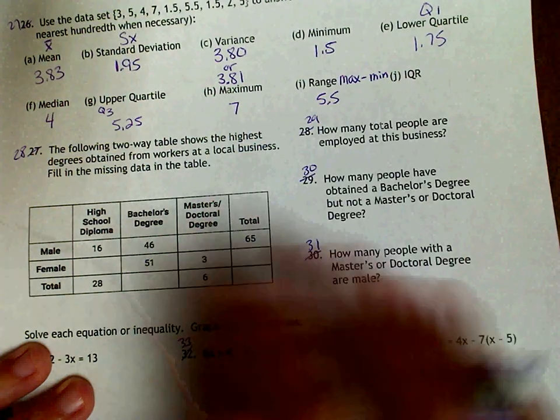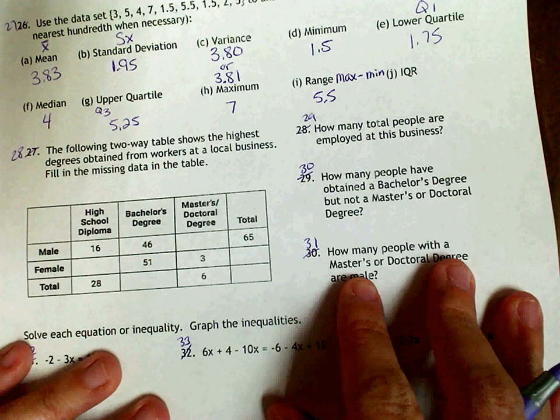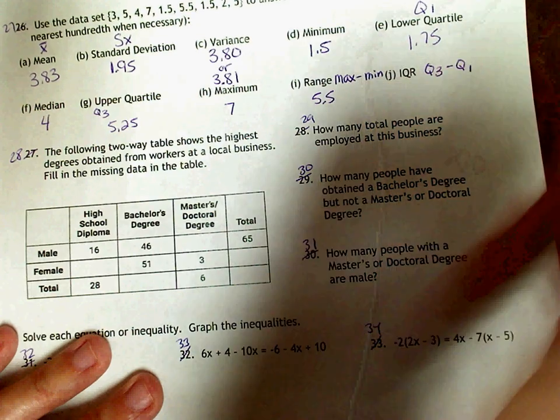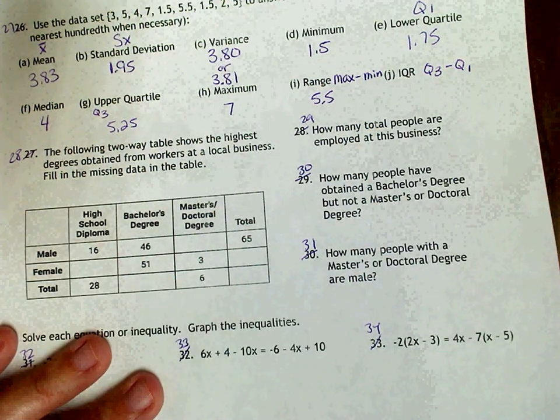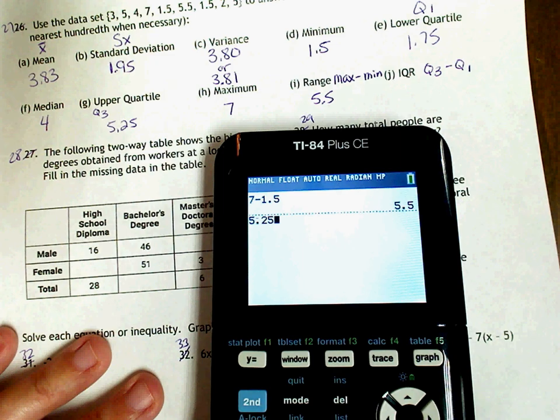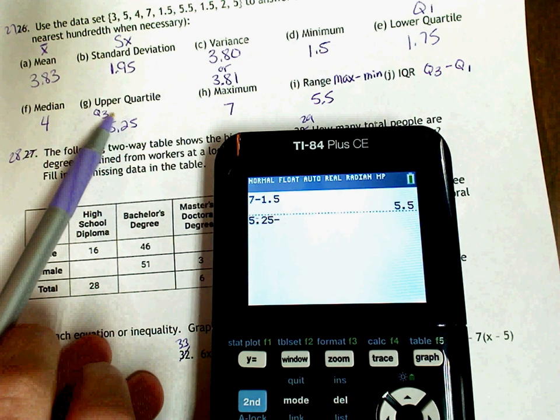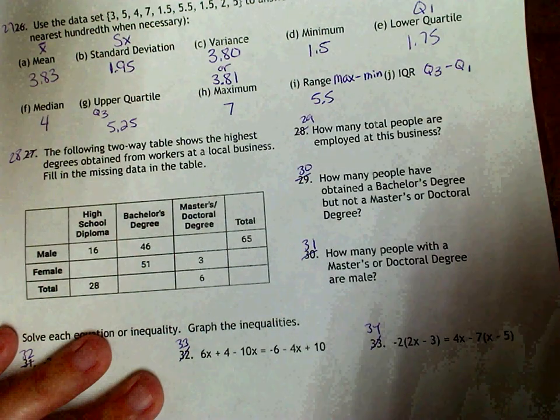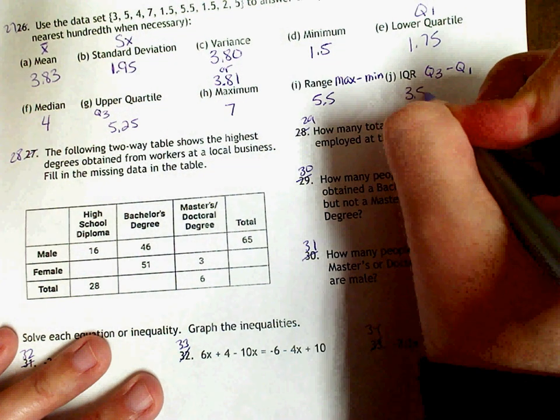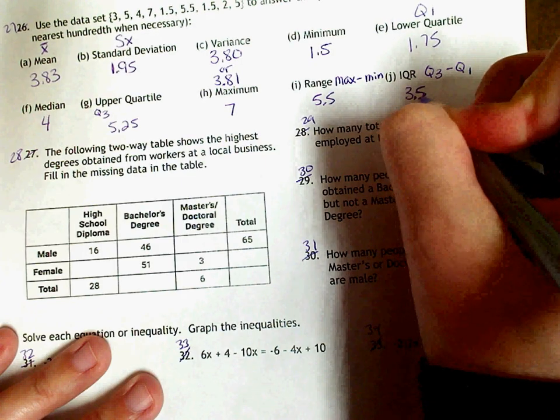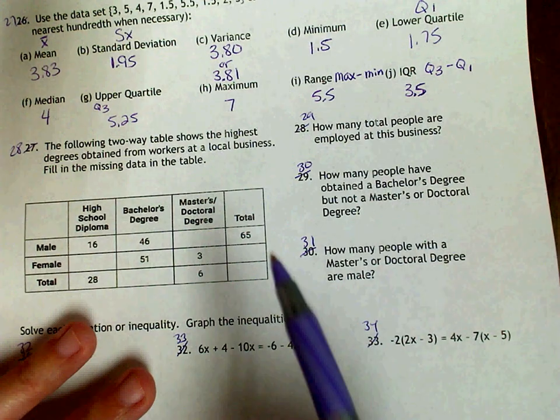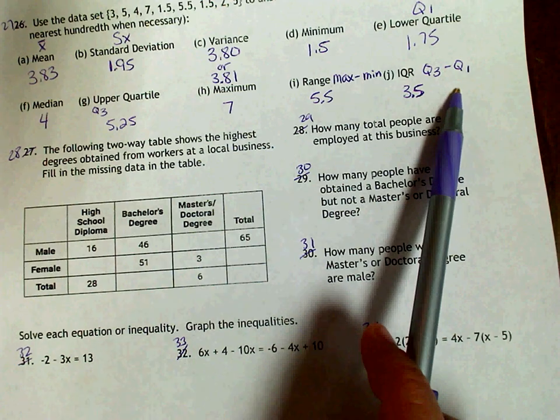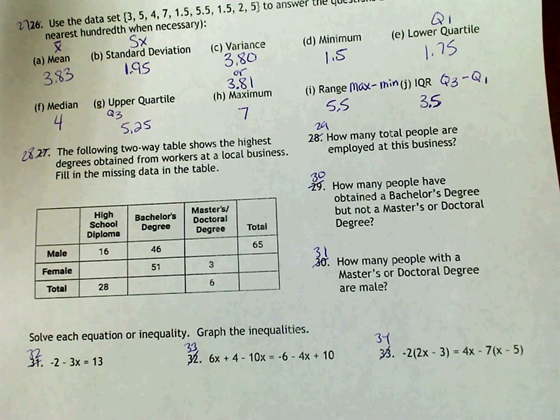The IQR, your interquartile range, is your Q3 minus your Q1. So that's 5.25 minus your Q1, which is 1.75. So 3.5. So again, remember these problems are way too easy for you to miss. But you've got to remember really how to find the variance. And then these two right here. The rest of it's all in your calculator.